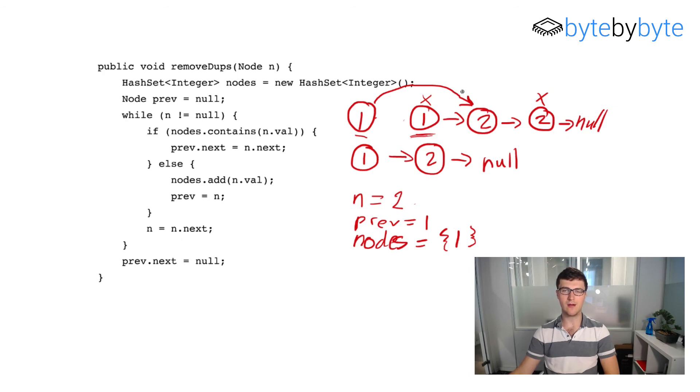And so now we're going to come back to our loop. We're going to say does nodes contain n.value, does nodes contain two? No it doesn't. So we're going to add two to our set. And then we're going to say prev equals n. So now prev is equal to two. And n equals n.next. So n is now equal to, we didn't have to erase it but it's going to be like two star. Right? It's going to be the second two.